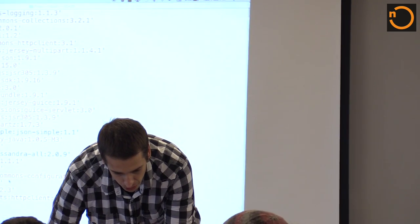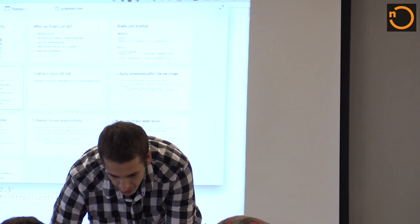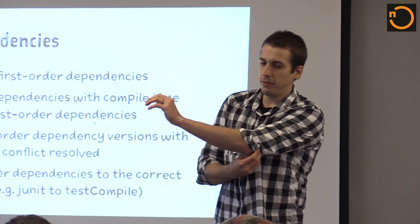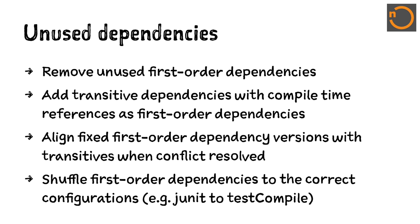Kind of hidden behind the scenes here — on the unused dependency plugin specifically, as it's implemented right now, it not only removes unused first-order dependencies, it also adds transitive dependencies that you actually have compile-time references to. That handles the case where you've accidentally depended on a transitive dependency, and then that transitive dependency no longer exists and suddenly your code doesn't compile anymore.